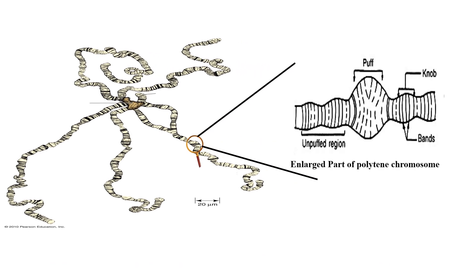Looking inside this chromosome under the light microscope, you can see some stripes which are called bands. It has light bands as well as dark bands. The light bands contain the active genes and represent euchromatin, while the dark bands act like heterochromatin and do not have any genes. These bands can swell up, forming structures called puffs or Balbiani rings, which are the site of RNA synthesis.